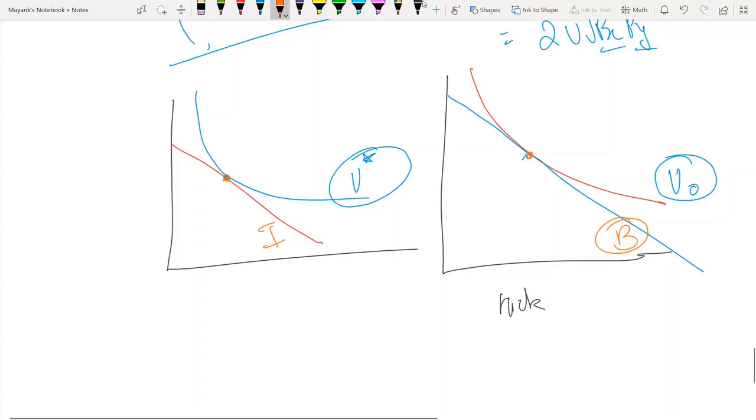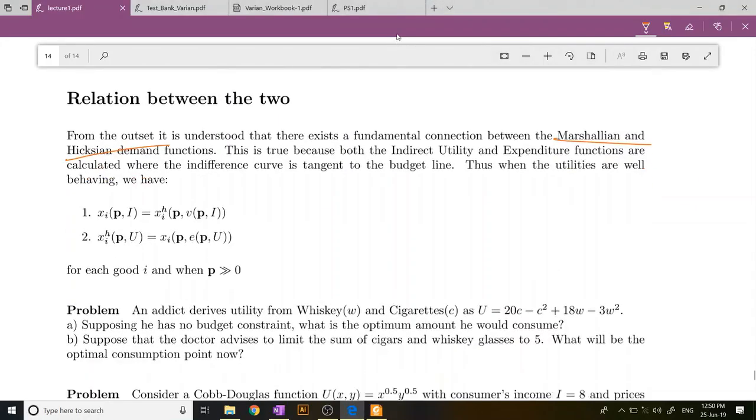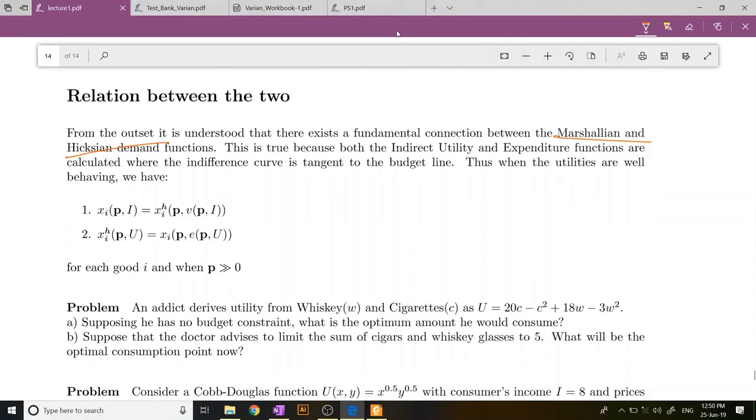If income that you are finding in Marshallian case was same as the budget which you find out in the Hicksian case, then effectively the point must have been the same. Because technically the problem is just finding the tangency. So that's the idea of this relationship.